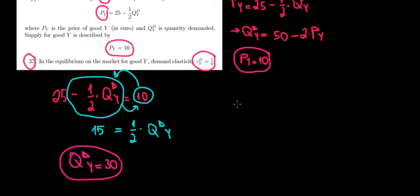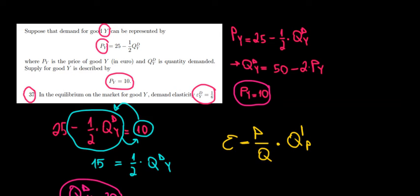The elasticity would be the price in equilibrium divided by the quantity in equilibrium multiplied with the derivative of the quantity with respect to price. So we are looking for the derivative of the quantity function with respect to price. That's just the slope of the quantity demanded function of Y, which we have it over here. And that slope is equal to minus 2.